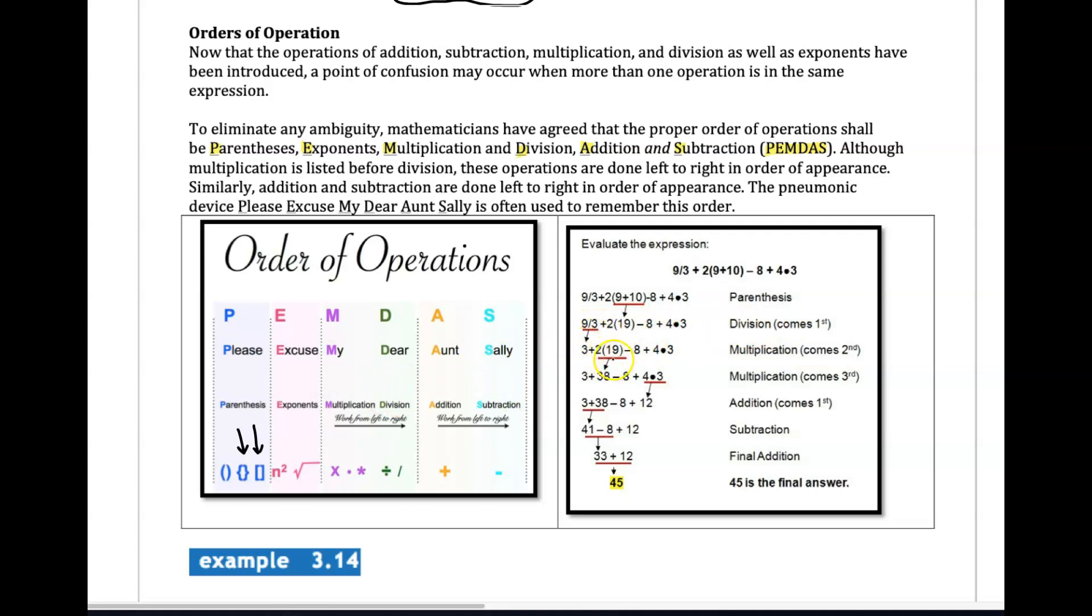And then you do that, do the multiplication, work left to right, get the 12 done. And now all you have left is adding and subtracting. And then after adding and subtracting, you're going to work left to right and you end up with a 45 there.